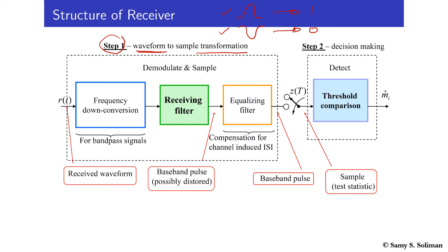The decoding step requires looking at the received pulse, which may be distorted due to channel impairments such as inter-symbol interference or other channel effects. The first step is to convert that waveform to a sample or a number on which a decision can be based. The decision is made in the second step — decision making — where based on the sample, the system determines which symbol the pulse represents, or in the binary case, whether it is bit one or bit zero.